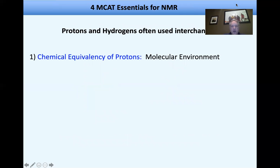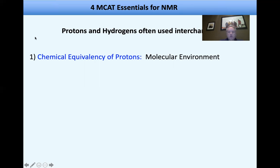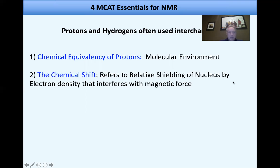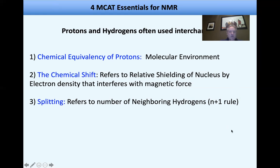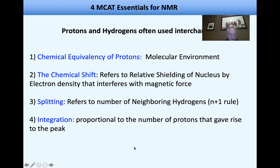So there's four essentials for the MCAT on NMR. I mentioned that protons and hydrogens are used interchangeably. There's what's known as the chemical equivalency of protons. And so the molecular environment by which the proton resides in is fundamental to its NMR spectra. The chemical shift refers to shielding of the nucleus by electron density. So if, for example, you have an electron withdrawing group next to a hydrogen, what will happen is that since the electron withdrawing group is going to suck electrons towards itself, it's going to expose the nucleus to the magnetic field. And what you'll get is a chemical shift. And we'll take a look at that in a moment. There's also splitting. This is called the N plus one rule, and it refers to the number of neighboring hydrogens. So the number of neighboring hydrogens will affect the actual spectra. And then lastly is integration. This is proportional to the number of protons that give rise to the peak.